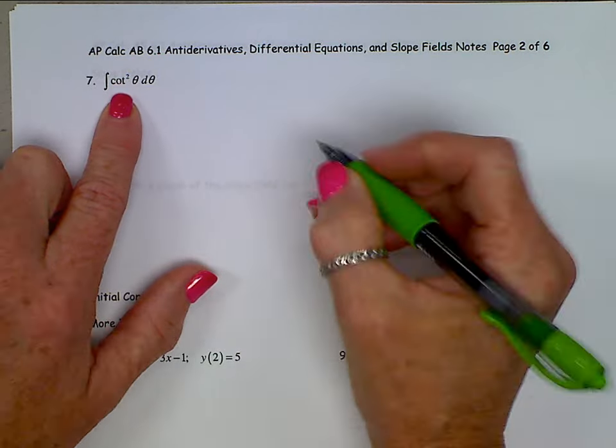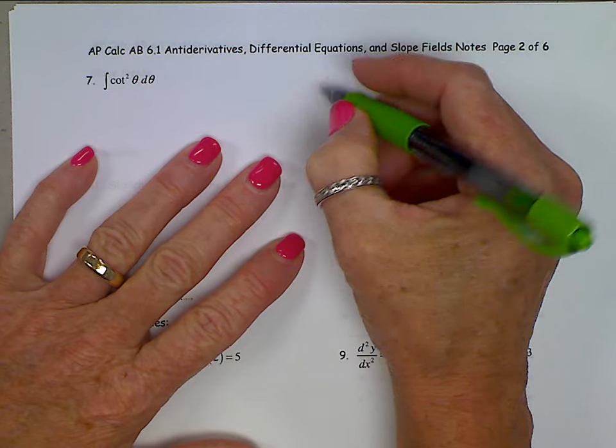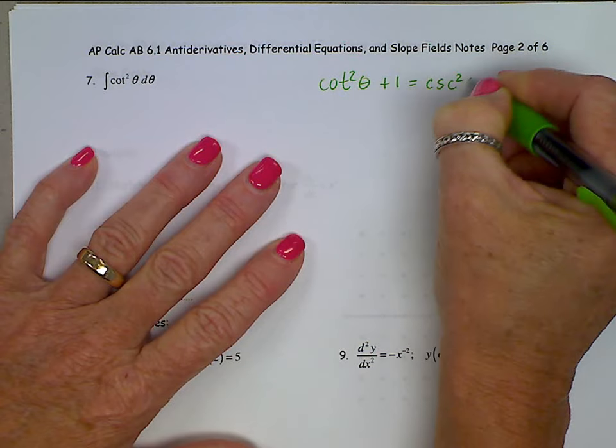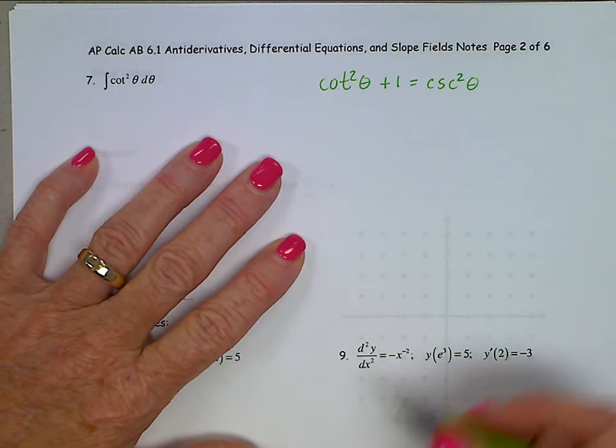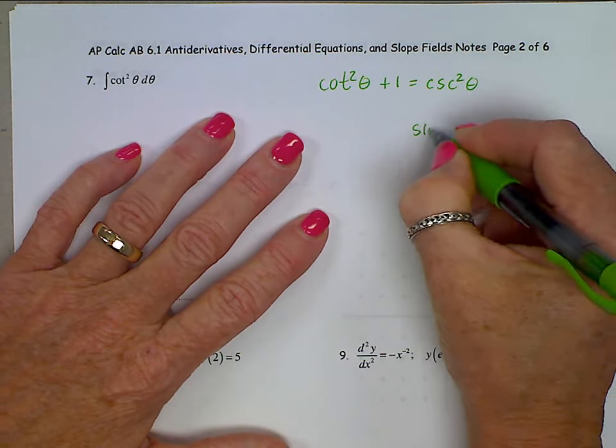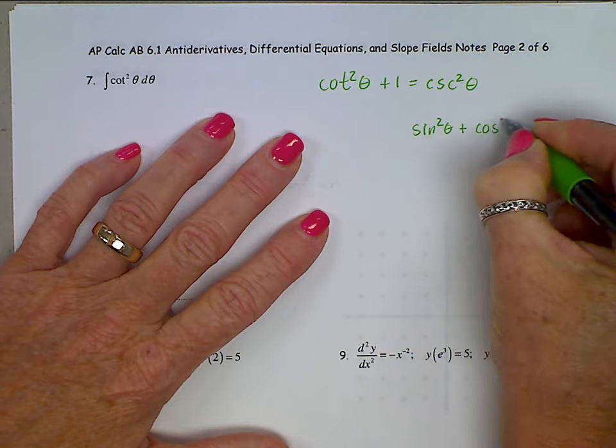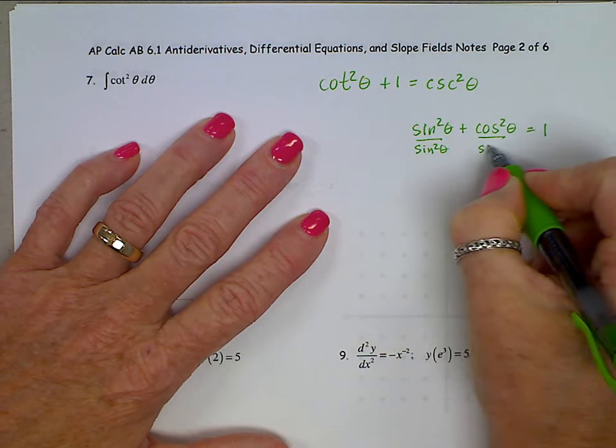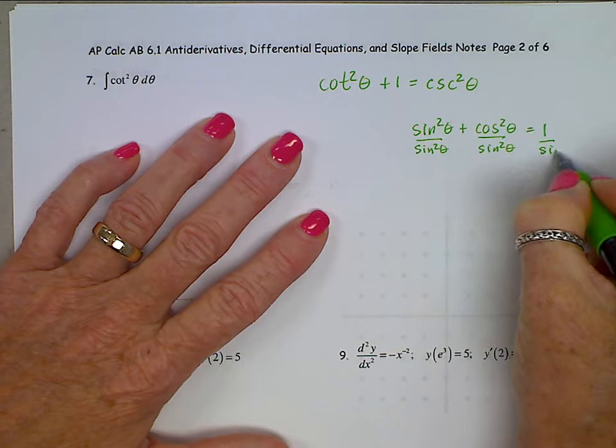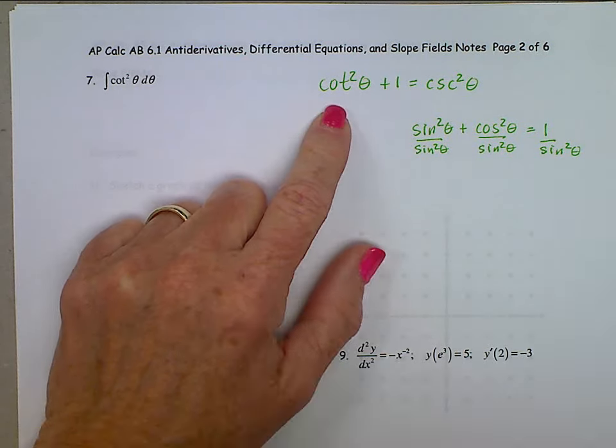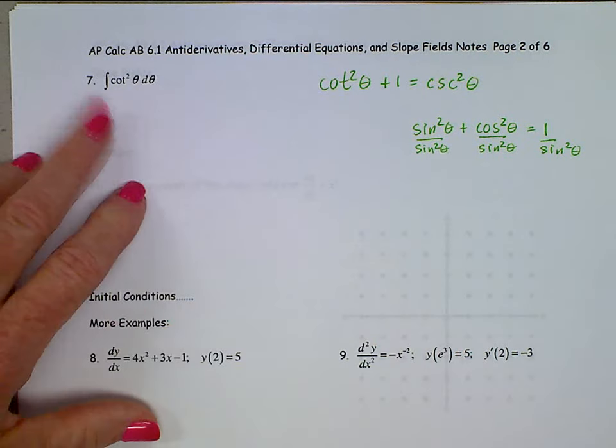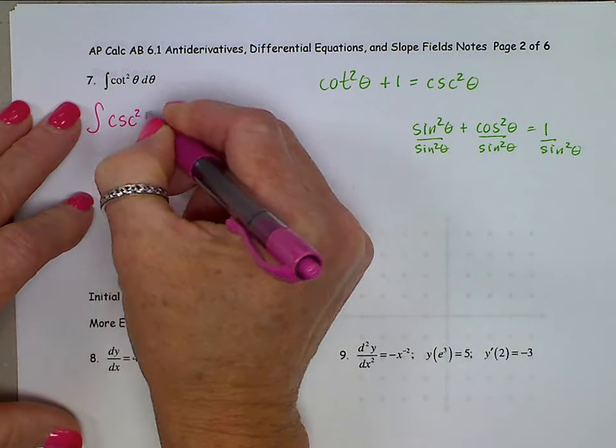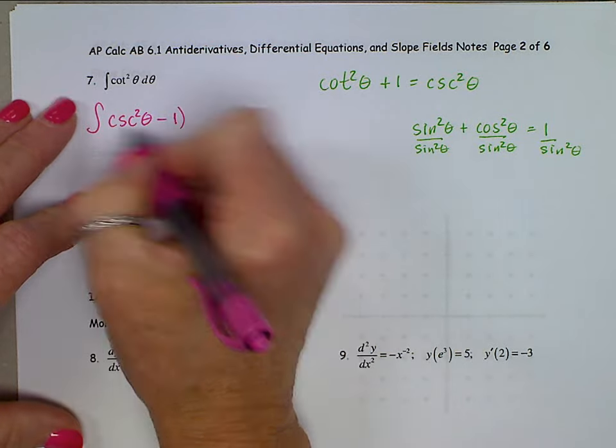So you need to think back to pre-calculus and remember this identity that says cotangent squared theta plus 1 is cosecant squared theta. If you have forgotten that, you can always generate that by using sine squared plus cosine squared equals 1 and then divide out everything by sine squared. So now I'll come over here and let's replace out this cotangent squared with cosecant squared theta minus 1 d theta.